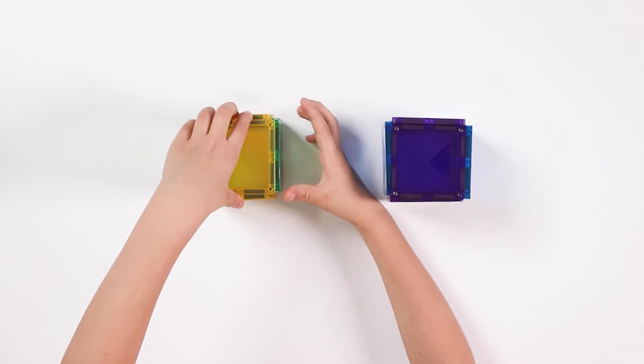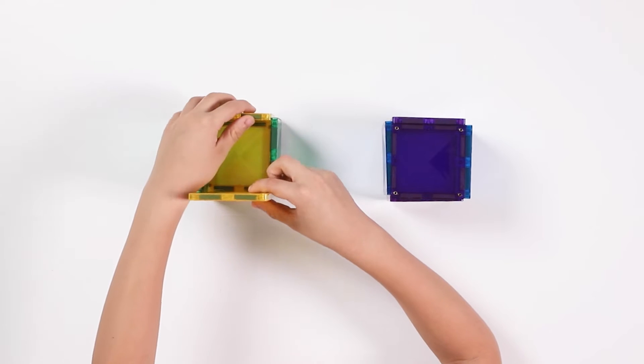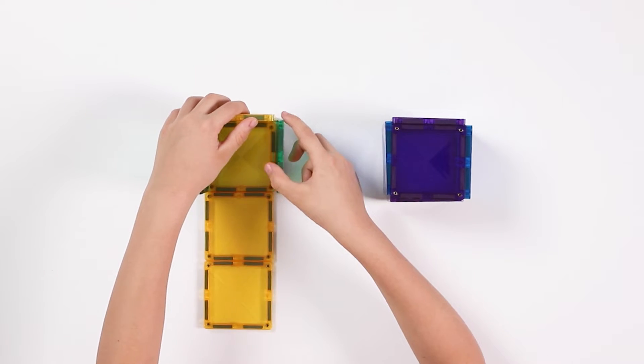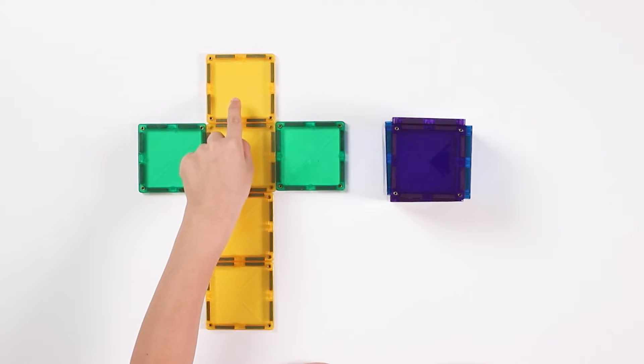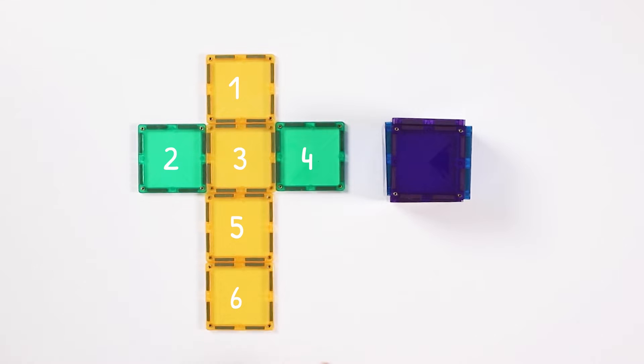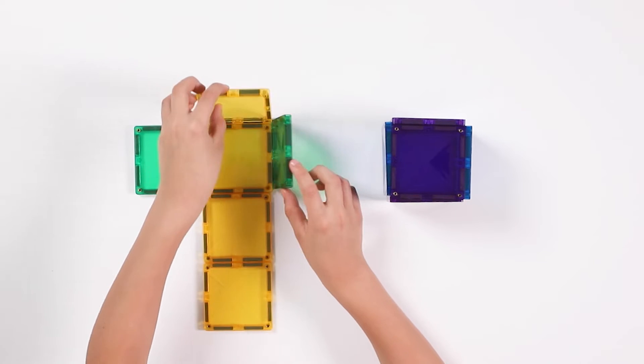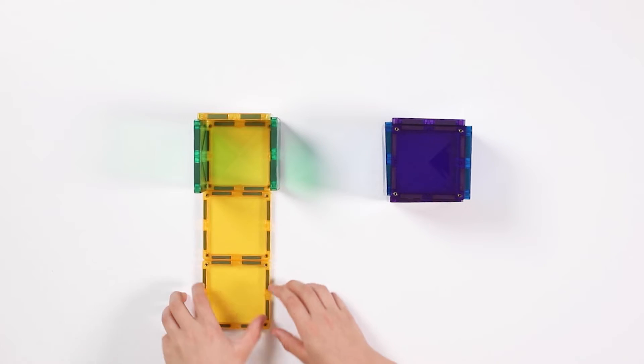When you open up the cube and lay all the faces out flat, it becomes a net. The net for the cube has 6 faces. When you fold the net back up, it creates a cube again.